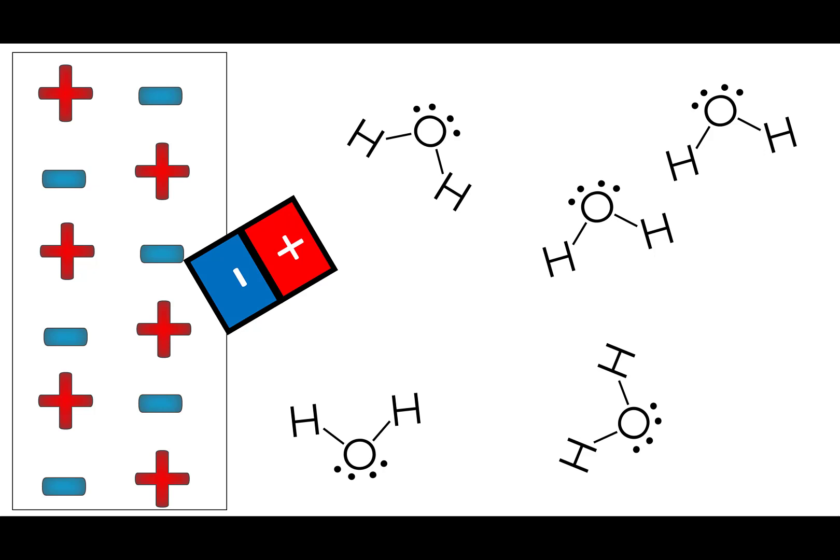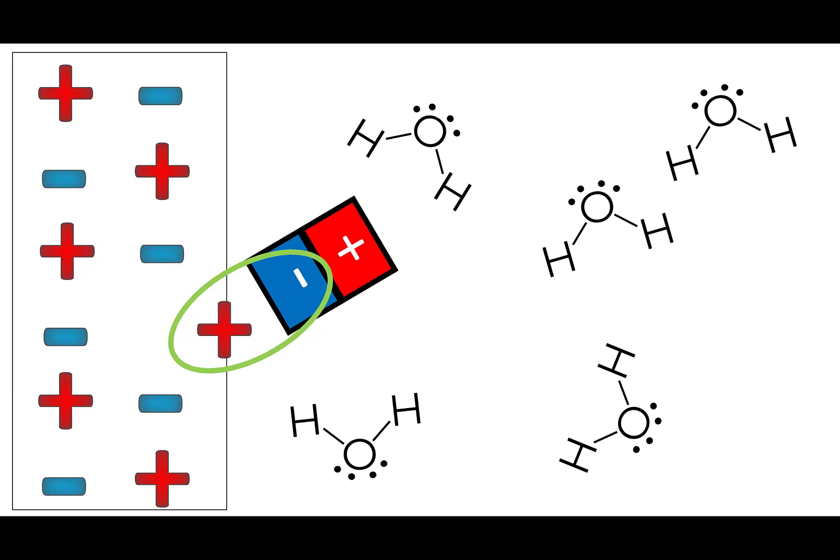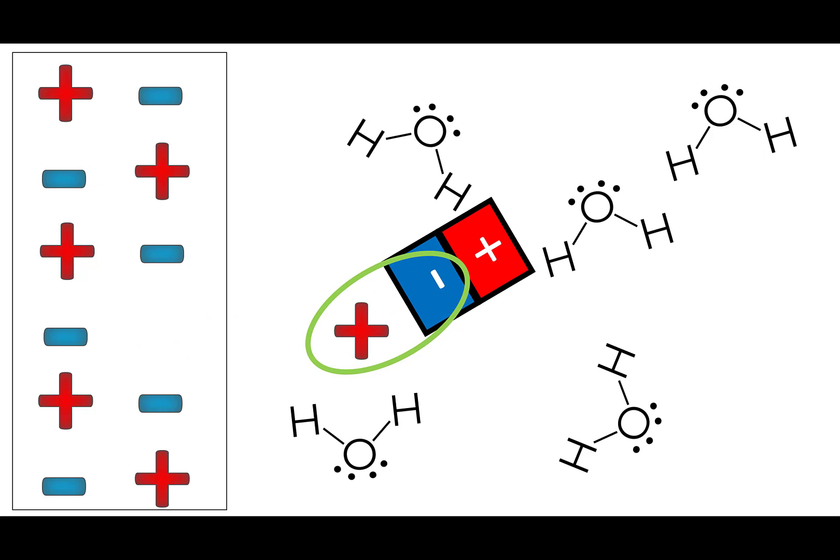And magnets attract each other, specifically the opposites will attract. So that means that this negative end of this water molecule will attract this positive atom in the crystal. So when they're attracting, the water molecules are still moving around, it's a liquid, and so when it moves away it drags this particle with it.